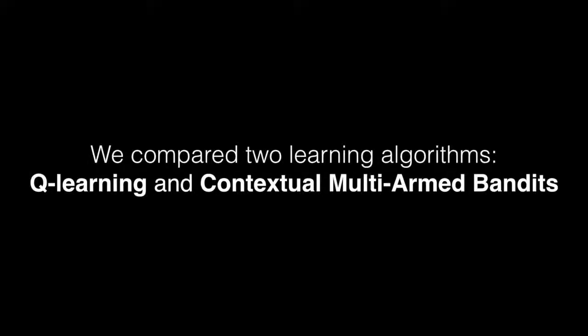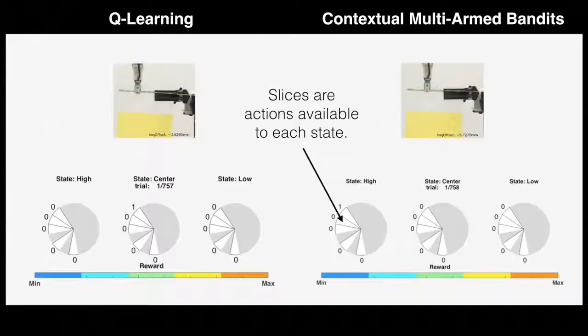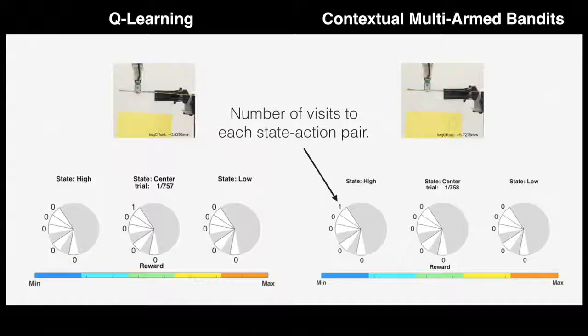We now compare the two reinforcement learning algorithms. Each slice of the pie chart represents actions available for a specific state: high, center, or low. The number outside of each slice indicates the total number of visits or context arrivals for that state-action pair.